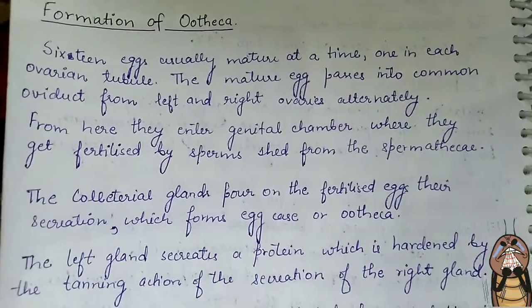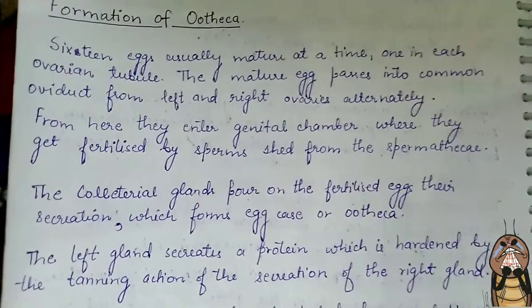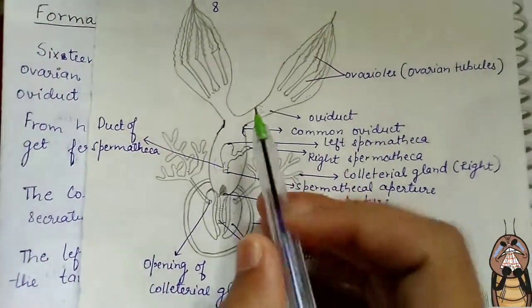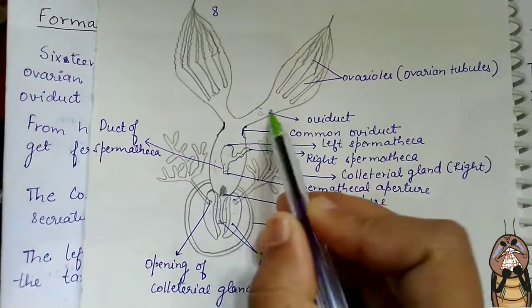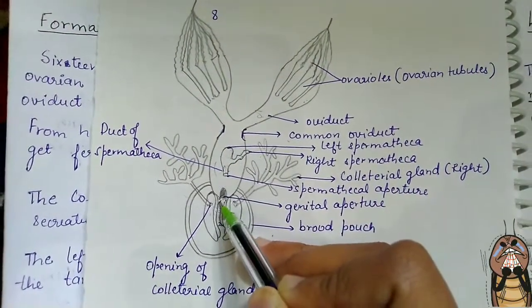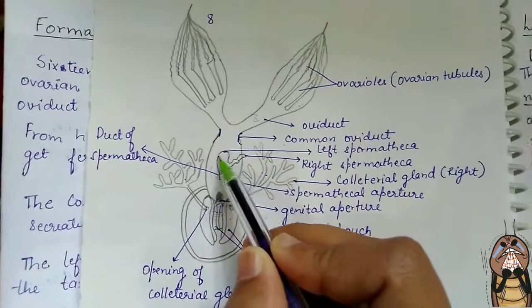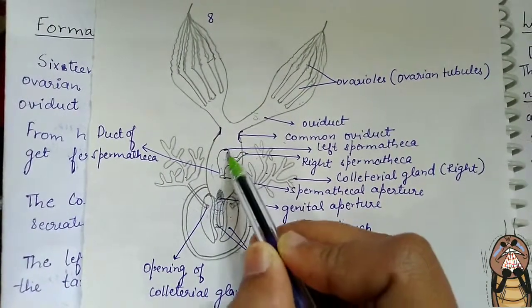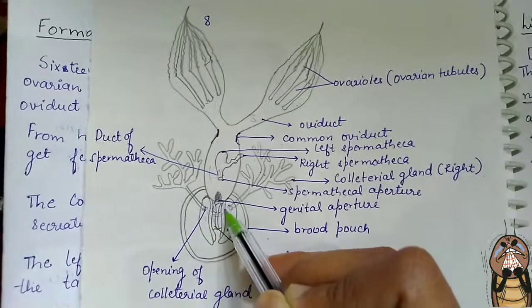Both sets of eggs pass into the common ovarian tubules, and from the common ovarian tubules, all the eggs move into the genital chamber. From the genital chamber, the sperms from the spermatheca fertilize the eggs.